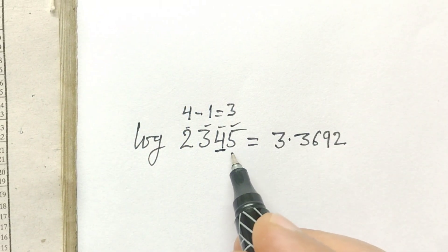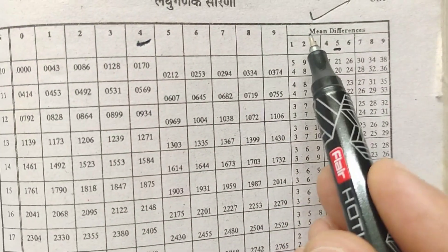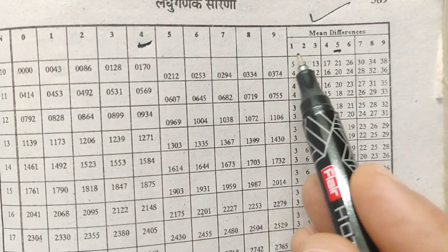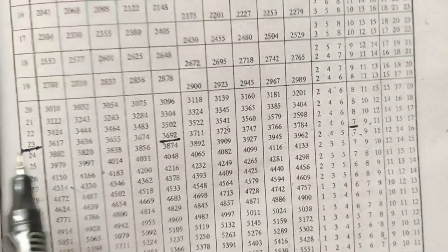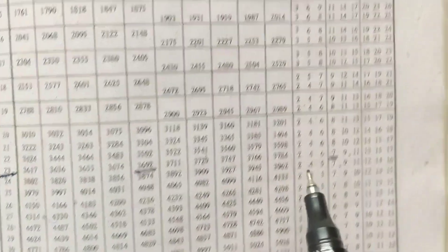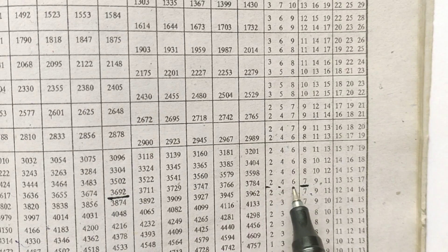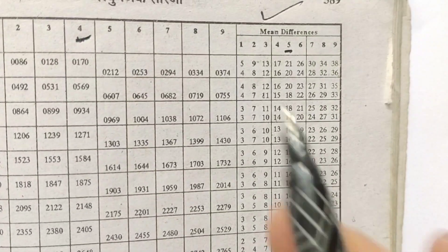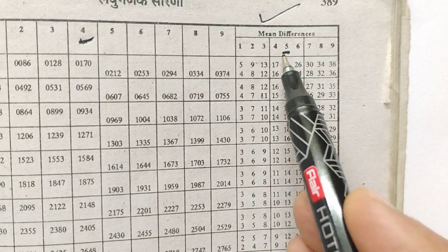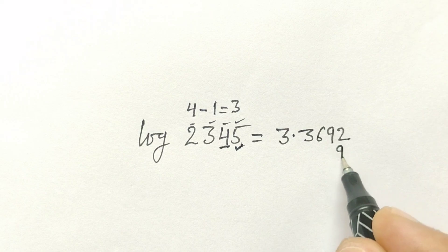Now we will see the mean difference in the 5th column. What is the mean difference in the 5th column? The columns are 1, 2, 3, 4, 5, 6. For row 23, the mean difference in the 5th column is 9. So we will write 9 here.